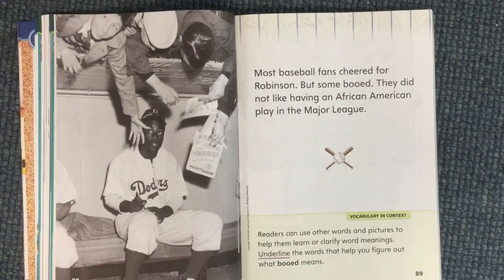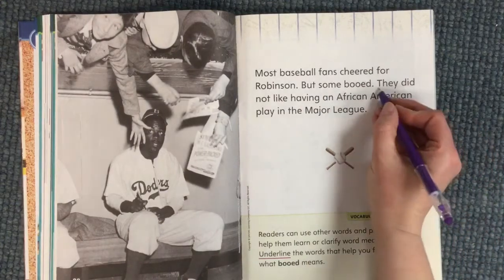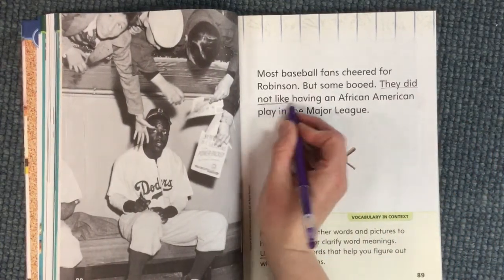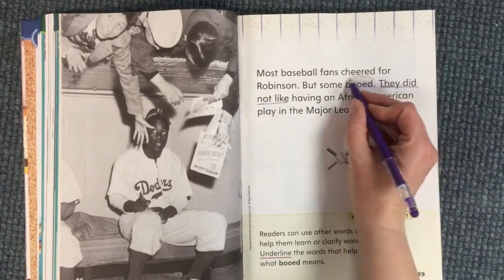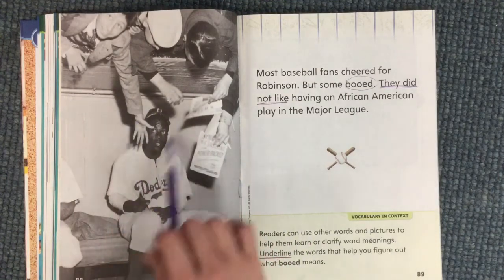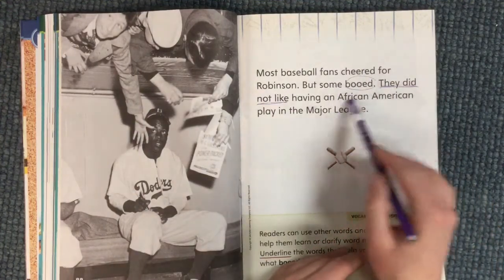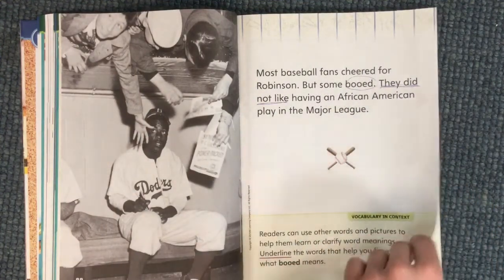Most baseball fans cheered for Robinson, but some booed. They did not like having an African American play in the Major League. Underline the words that help you figure out what 'booed' means. 'They did not like' — that makes me know this is a negative word. I can also look at the picture. Booed means they're going 'boo' because they don't like something.